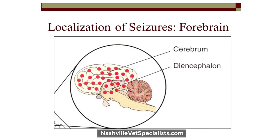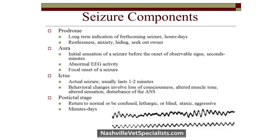Seizures are typically due to lesions or insults that originate in the forebrain — our cerebrum and thalamus. Animals with seizures don't typically have cranial nerve deficits because most of the cranial nerves originate from the brain stem. If you do see multiple cranial nerve deficits along with seizures, that can help with differentials. But if we're dealing strictly with seizures without cranial nerve deficits, we're dealing with a lesion in the forebrain.